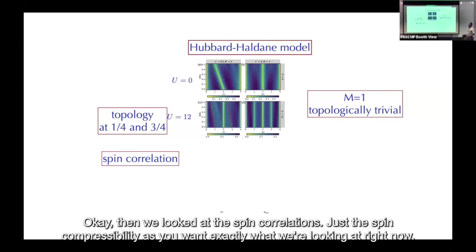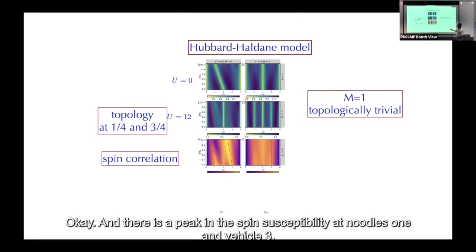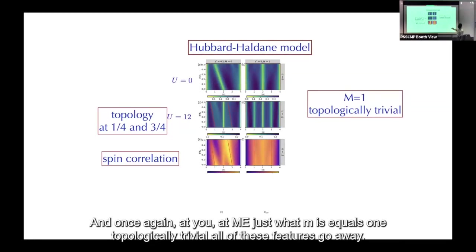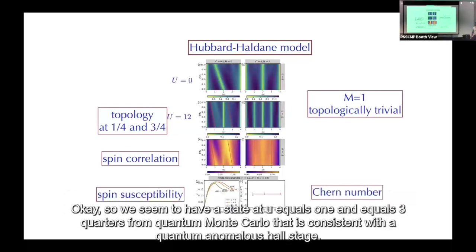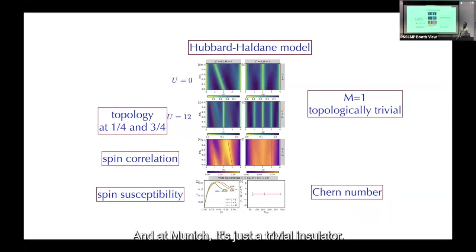We then looked at spin correlations — the spin compressibility — and there is a peak in the spin susceptibility at ν=1 and ν=3. Again, at m=1 (topologically trivial) all these features vanish. The Chern number is one, consistent with a quantum anomalous Hall state. So we have a state at ν=1/4 and ν=3/4 from quantum Monte Carlo consistent with quantum anomalous Hall, and ν=2 is just a trivial Mott insulator.